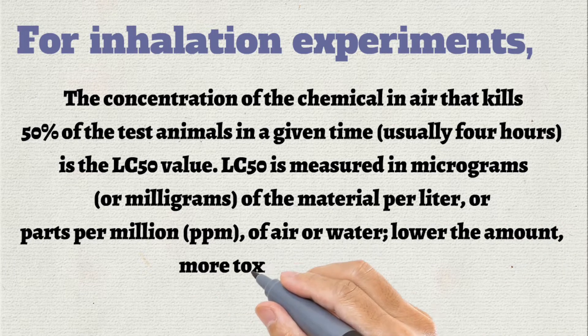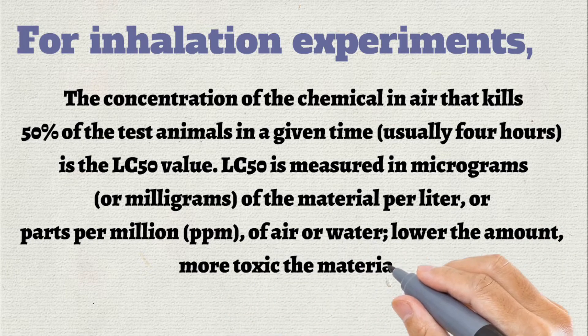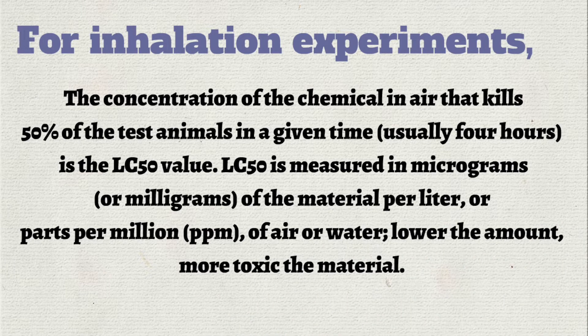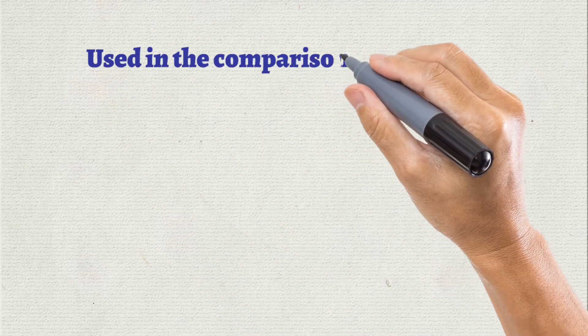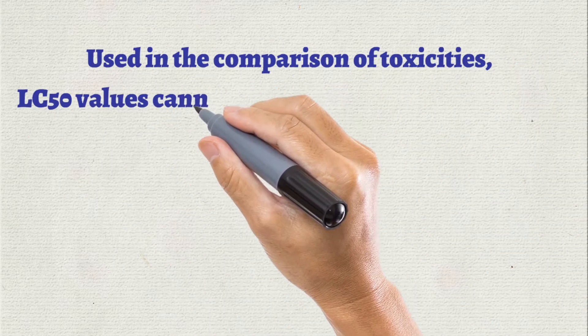LC50 is measured in micrograms or milligrams of the material per liter, or in ppm — that is parts per million. It is used in the comparison of toxicities. LC50 values cannot be directly extrapolated from species to species.